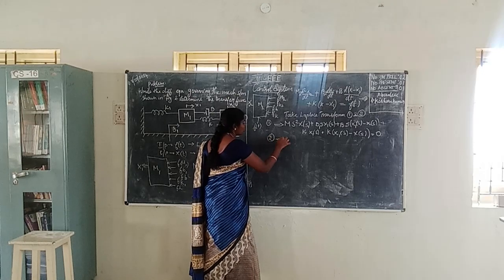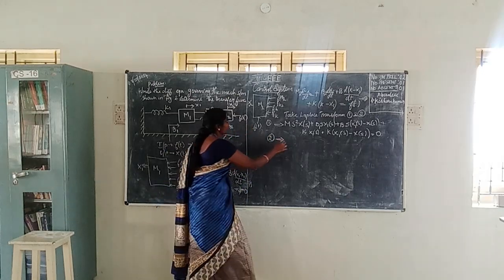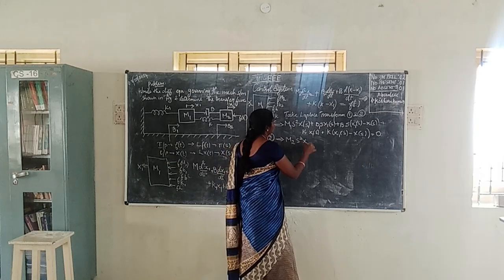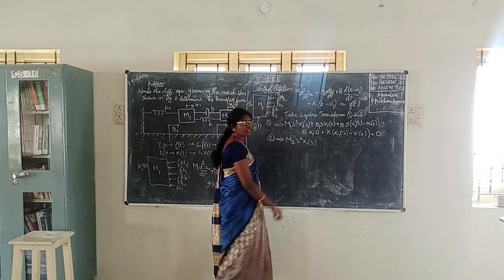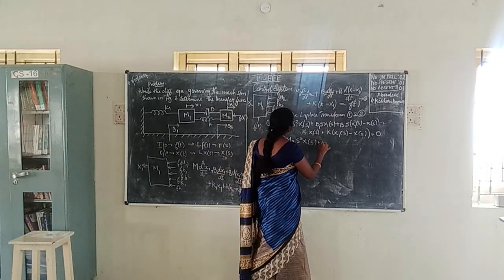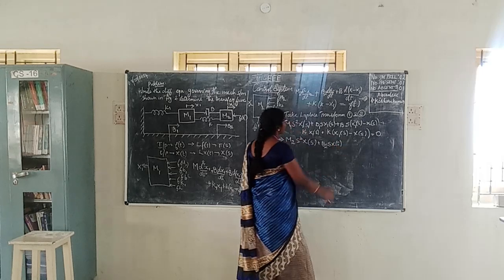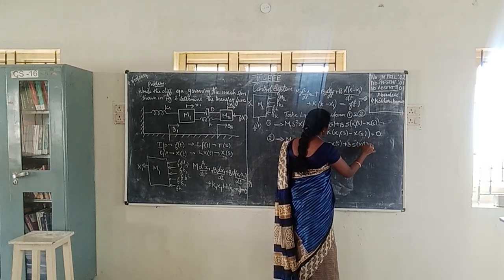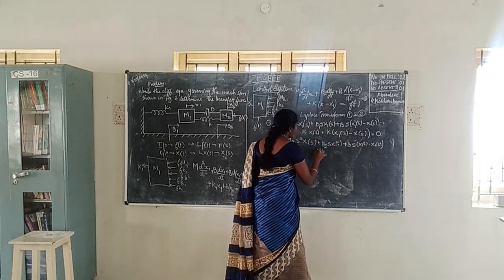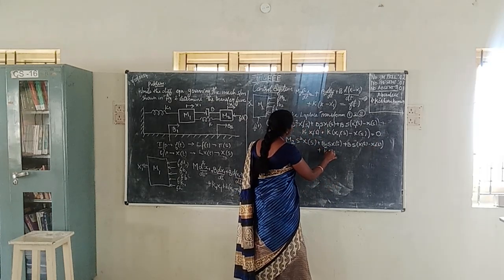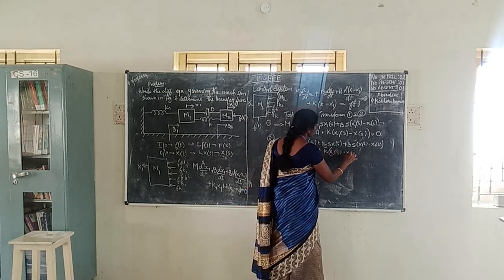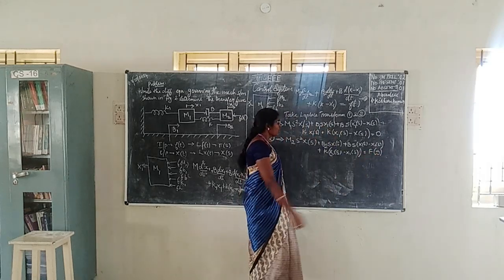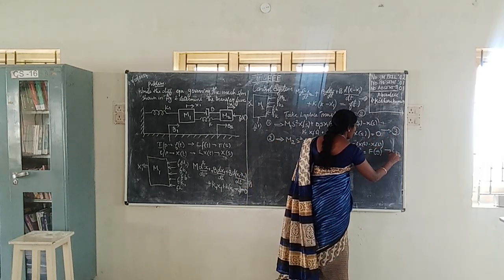We label the Laplace-transformed equation for M1 as equation 3 and the Laplace-transformed equation for M2 as equation 4. The inner output is X1(s) and the final output is X(s). We need to determine the transfer function, which is defined as output divided by input: X(s) / F(s).